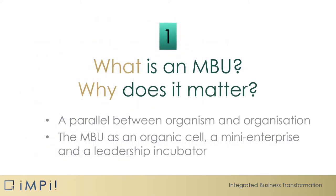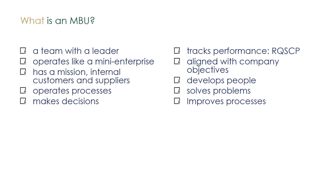Chapter 1: What is an MBU? An MBU is a team with a leader. It operates like a mini-enterprise and has a mission, internal customers, and suppliers. The MBU operates processes and makes decisions. It tracks performance, risk, quality, speed, cost, and people development and engagement. The performance is aligned with the company objectives.